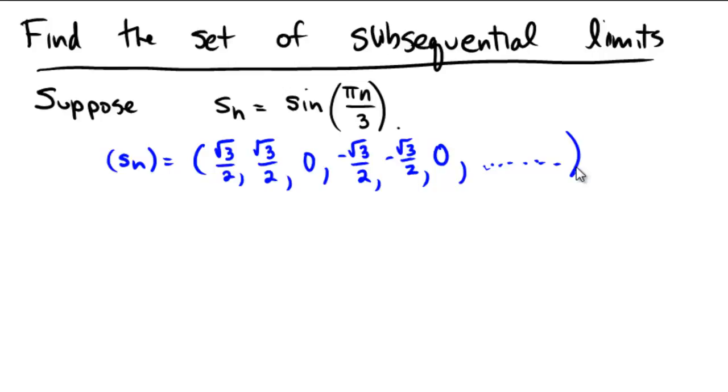Now, the sub-sequential limits would be the limits of any sub-sequence of points that you can take from the sequence. So if we looked at this and we took every multiple of 3, the third term, and the sixth term, and the ninth term, we would just be pulling out a sequence of 0s.